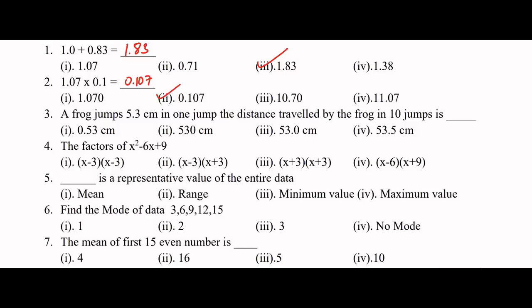A frog jumps 5.3 cm in one jump. Distance traveled by the frog in 10 jumps — so 5.3 into 10 gives us 53. So the answer is 53 cm, which is the same as 53.0.